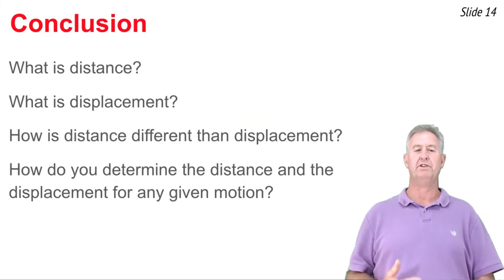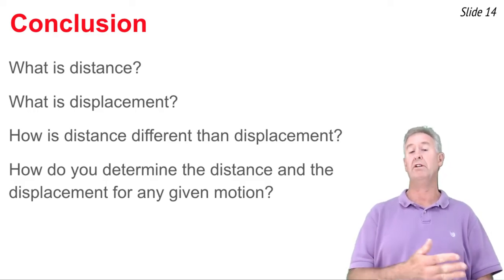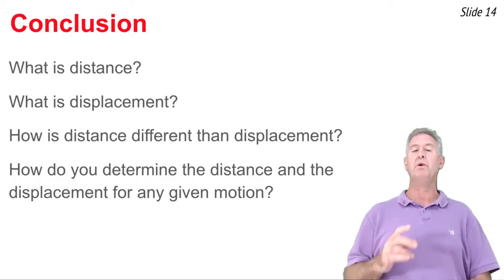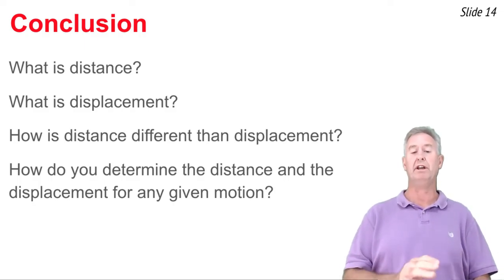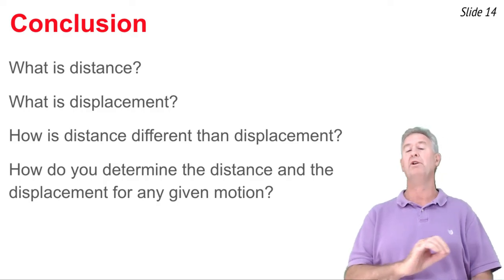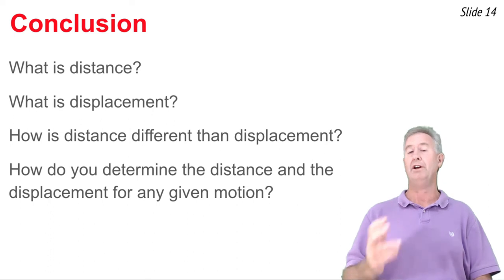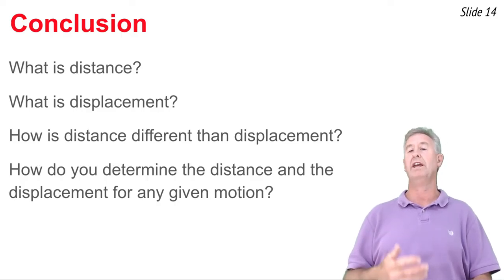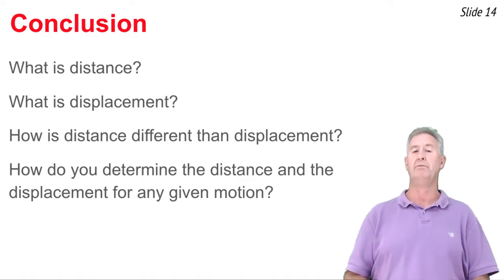In this video we set out to understand what is distance and what is displacement. We've learned that distance is the amount of ground covered, and displacement is the overall change in position of an object. They differ because distance is a scalar — unaware of direction — while displacement is direction-aware at all times, and direction changes have great effects upon displacement. Finally, we've learned how to calculate distance and displacement for simple and more complicated multi-leg motions.